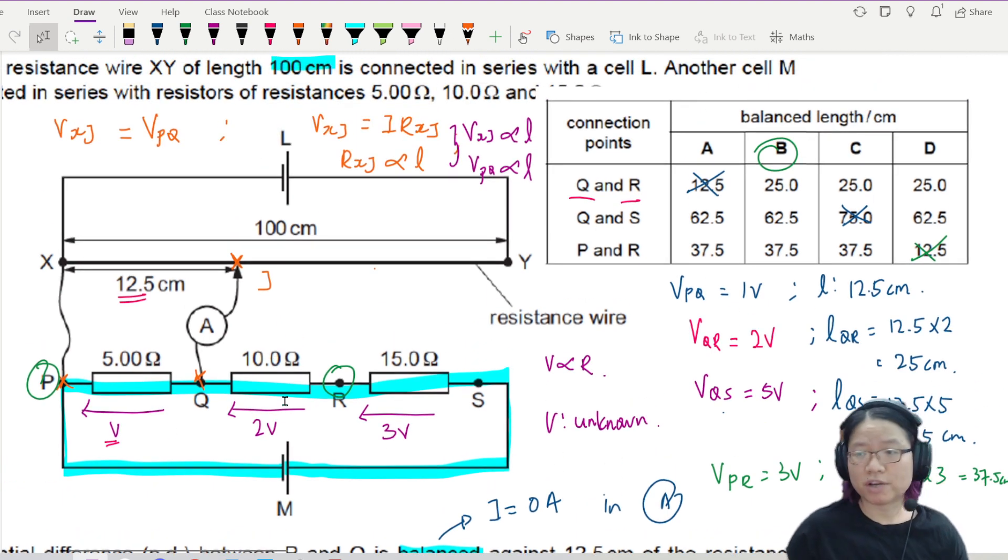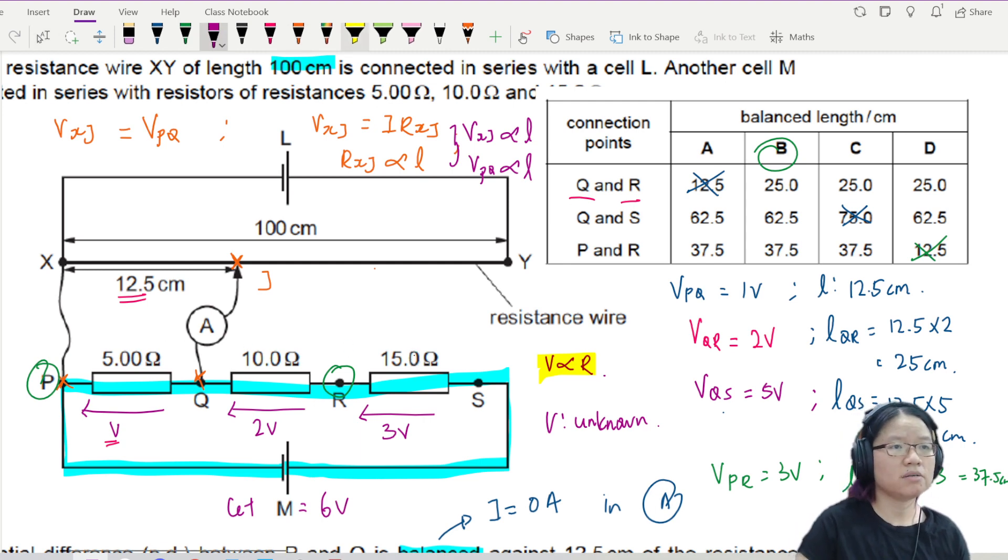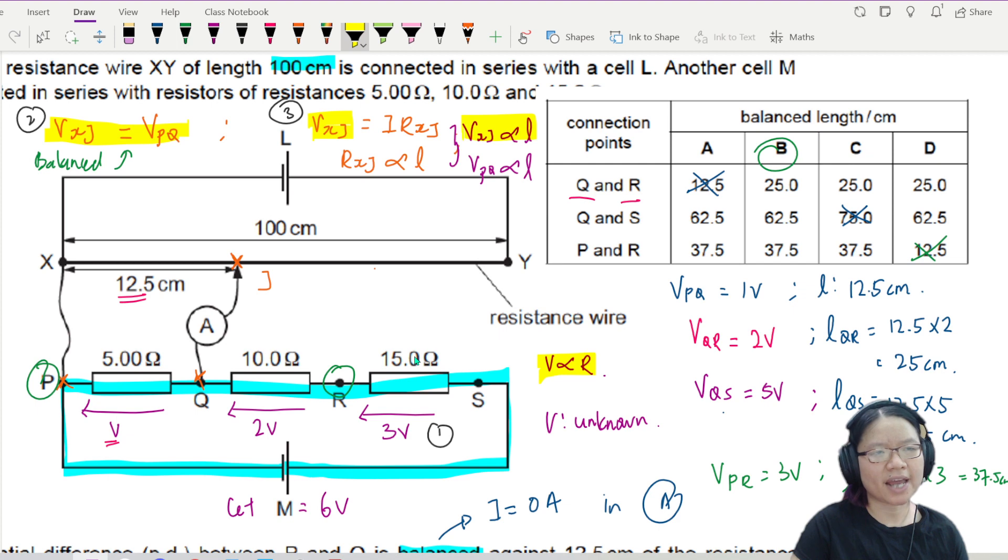So what's the takeaway here? Number one, whenever we share resistance, whenever there's resistance placed in series like this, this is potential divider. They are sharing potential in proportion to their resistance. So first proportionality relationship that we use is V is proportional to R. V can be unknown, or if you don't want to deal with unknowns, you just let M be equal to 6 volt. 1, 2, 3. Of course, the ratio is 5, 10, 15. The second thing is at balance length, VXJ is equal to VPQ. Balance. If XJ is equal to PQ. And the third thing to note is, so this is number one. This is number two. Number three is the proportionality relationship. Which is VXJ is proportional to length, because length is proportional to resistance. Hence, potential per unit length. So if XJ is proportional to length, and XJ is equal to PQ, so PQ is proportional to length.